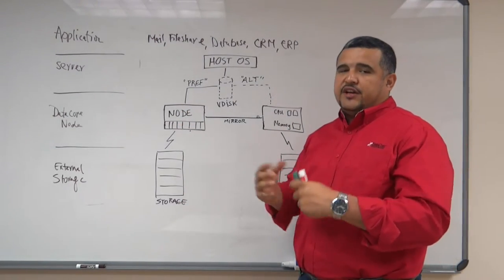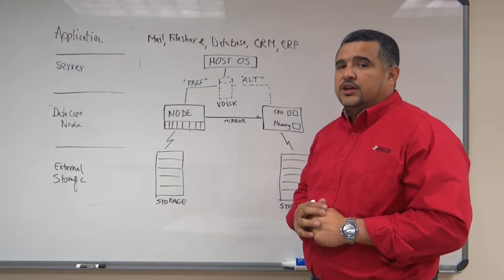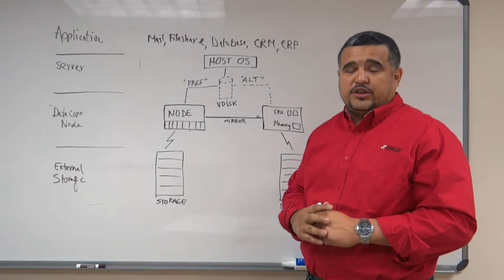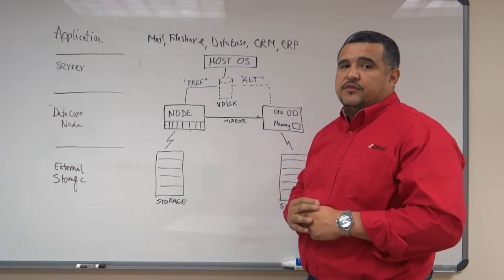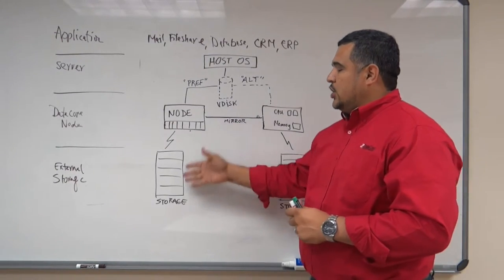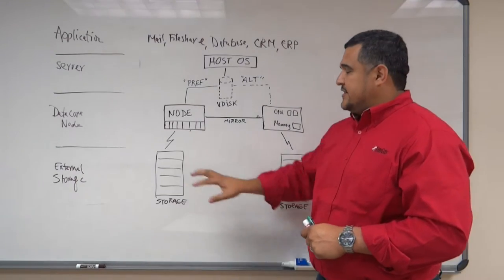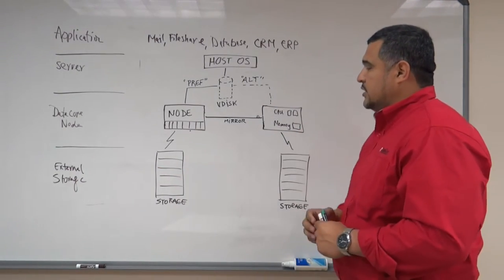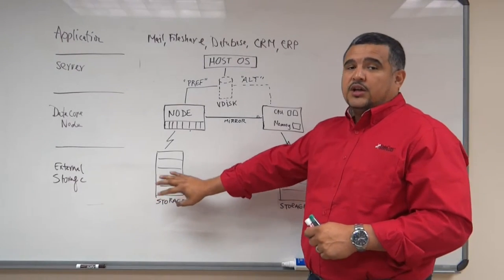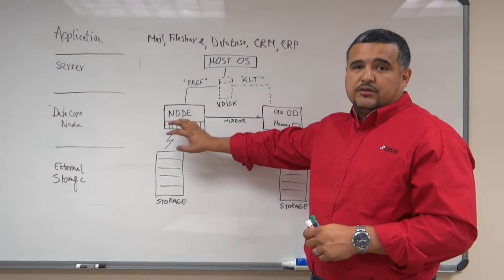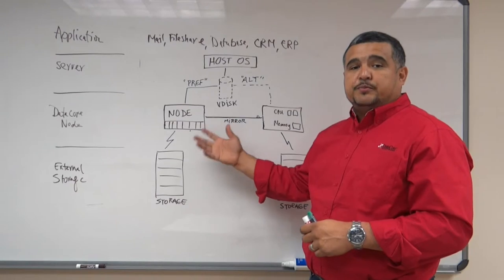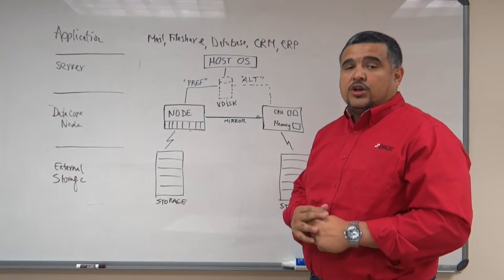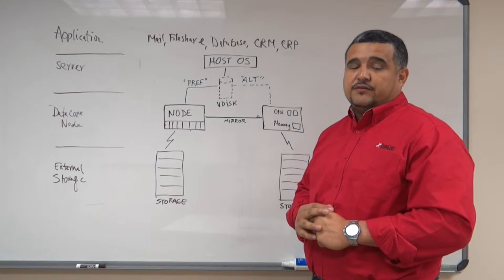In order to have an HA configuration with DataCore, you would have to deploy two DataCore nodes running Windows 2012 and the DataCore software. Right below that, you'll be able to provision separate storage subsystems under each DataCore node. That storage can be external and you could use internal as well, and you could have a mixture of spindles, flash, or SSD — that will still work with a two-node HA configuration.